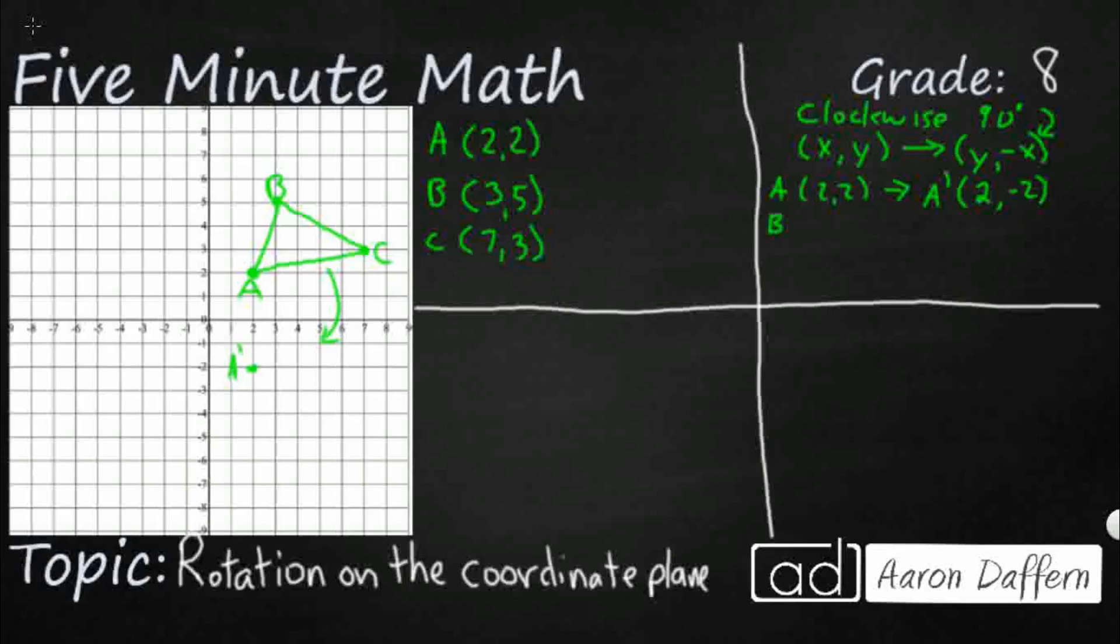We'll do the same thing for B. So B is 3, 5. So that's going to become B prime. We're going to take our y, 5, turn that into our new x. Then our x becomes negative, goes to our new y. So we got 5, negative 3. So that's B prime.